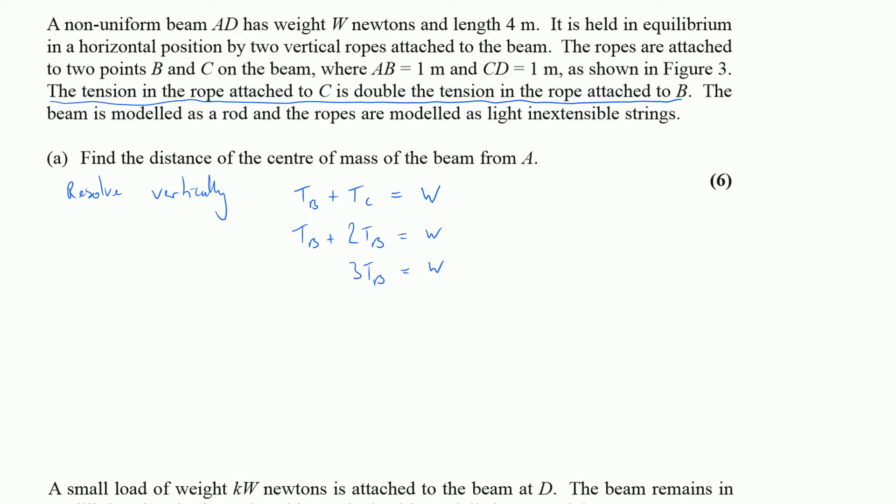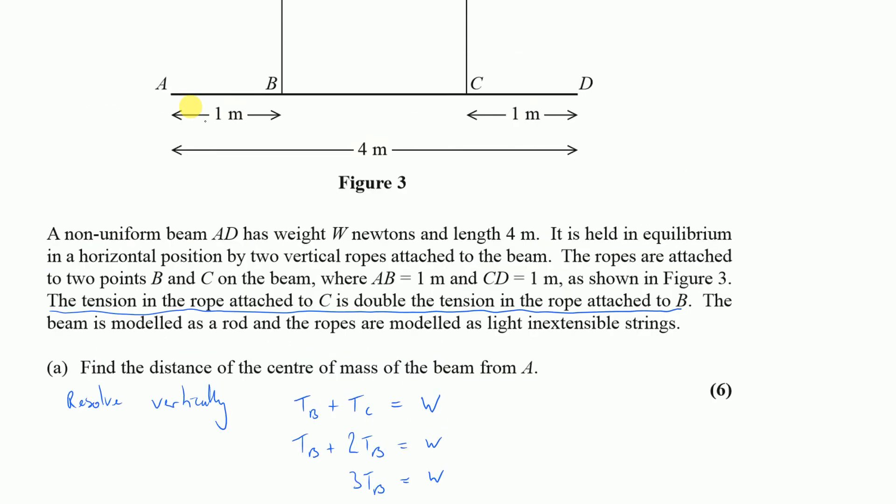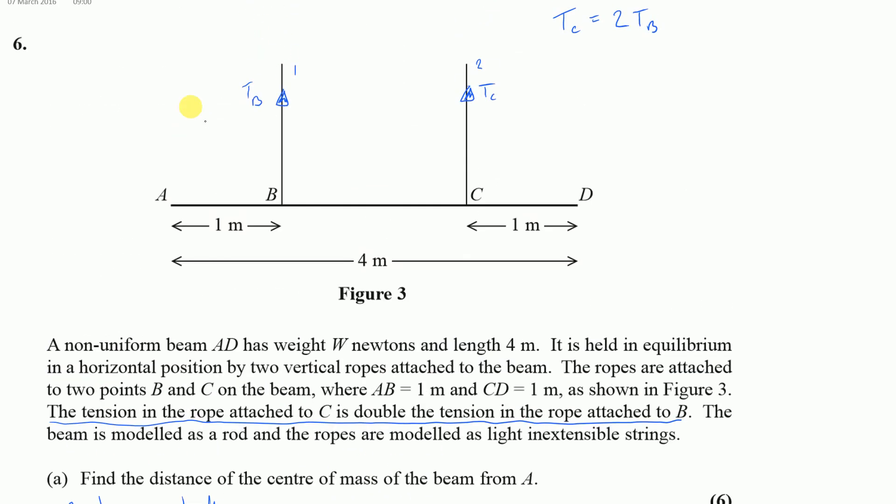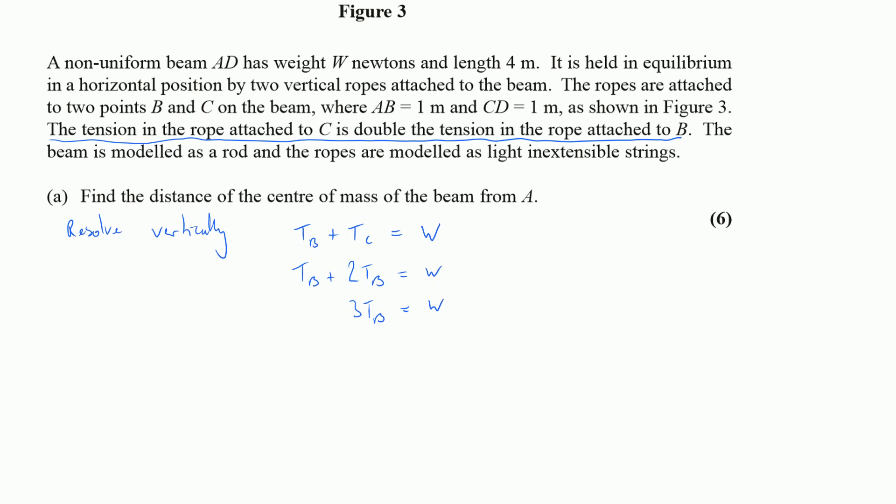Now the next thing is to take moments. Now I'm actually asked for the distance of the center of mass from A. So on my diagram, let's just pop back up here, where I'm thinking about the mass, somewhere around here, I want the distance as measured from A. So I'm going to call this distance x, and then for simplicity's sake, I'm going to take moments at A. That way, when I use the distance x, I know that I'm getting it as is and won't need to do any manipulation to it.